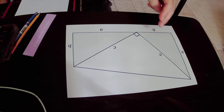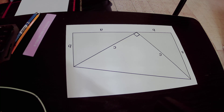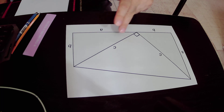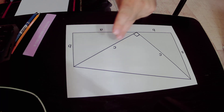The right triangle coincides with the left triangle. And because they coincide, this side must be side C, according to the rule that corresponding sides in congruent triangles are equal. So if this side is C, this side must also be C.